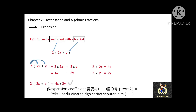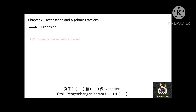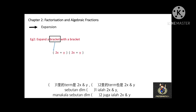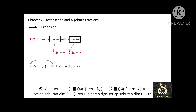See one more example: expanding a bracket with a bracket. In this case, the terms in the first bracket are 2x plus y, and the terms in the second bracket are also 2x plus y. To expand two brackets, each term within the first bracket is multiplied with each term within the second bracket. The expansion equals 2x multiplied with 2x, plus 2x multiplied with y, plus y multiplied with 2x, plus y multiplied with y.